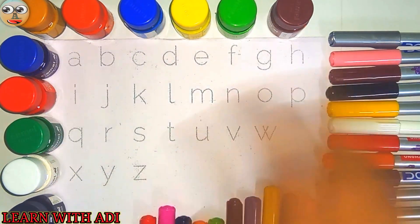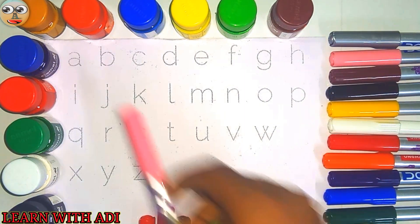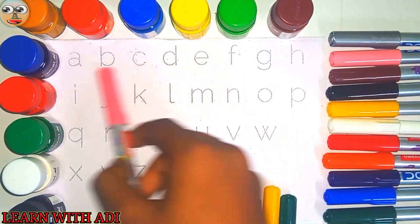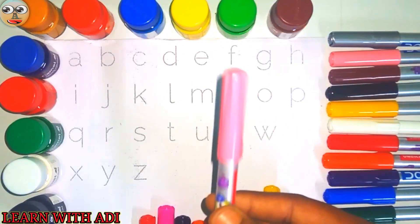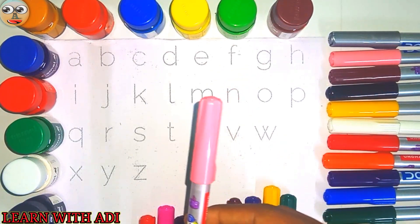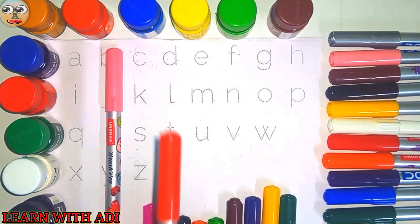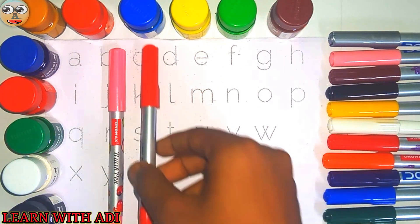Hello kids, today we will learn ABCD. Let's know the color names. This is peach color, this is red color.